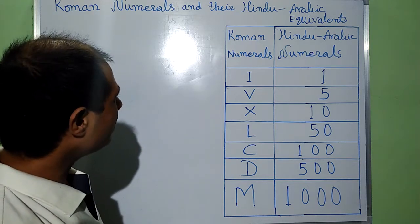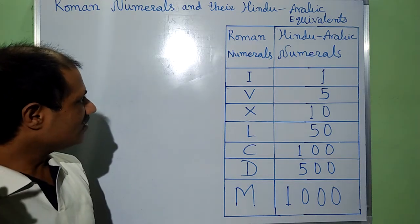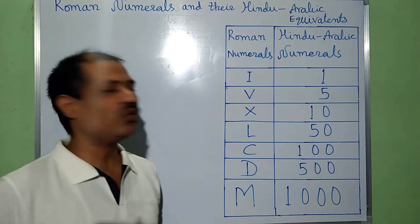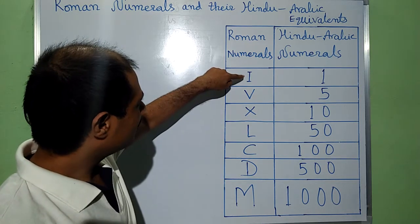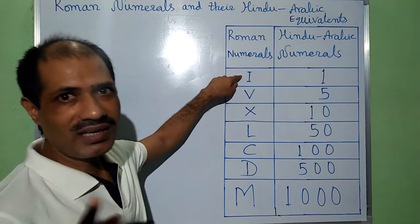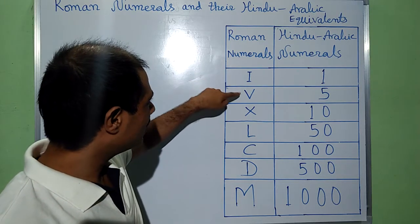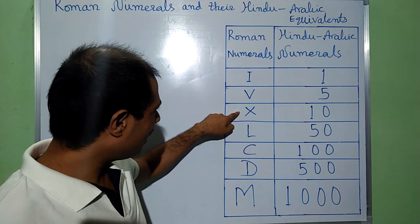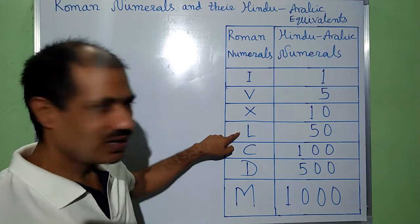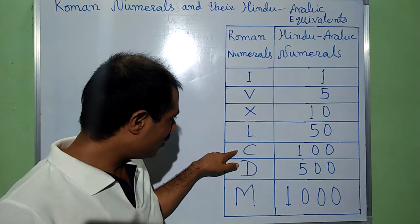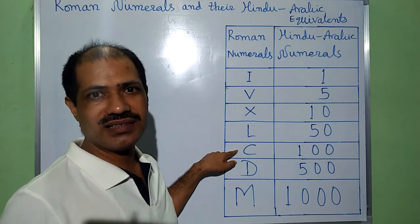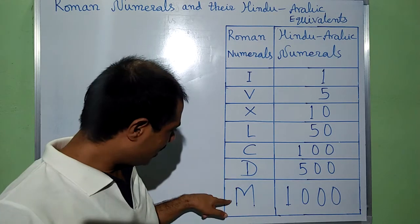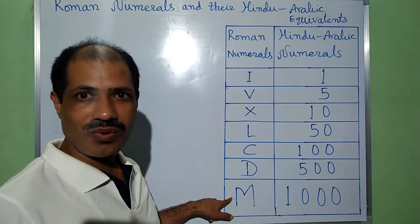As we observe, there are only 7 basic symbols in Roman numerals. This symbol I represents 1, V is for 5, X is for 10, L is for 50, C is for 100, D is for 500, and M is for 1000.